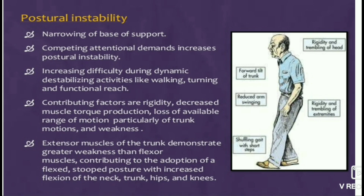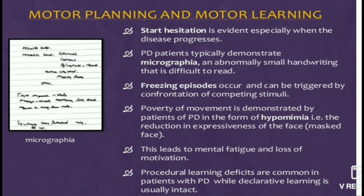Weakness contributes to the adoption of a flexed, stooped posture with increased flexion of the neck, trunk, hips, and knees — as seen in the figure where the man is heavily stooped. Forward tilt of the trunk is also shown. PD patients typically demonstrate micrographia, an abnormally small handwriting that is difficult to read, shown on the left side of the slide. Freezing episodes can be triggered by confrontation with competing stimuli. Poverty of movement is demonstrated by hypomimia — a reduction in facial expressiveness — leading to mental fatigue and loss of motivation. Procedural learning deficits are common while declarative learning is usually intact.